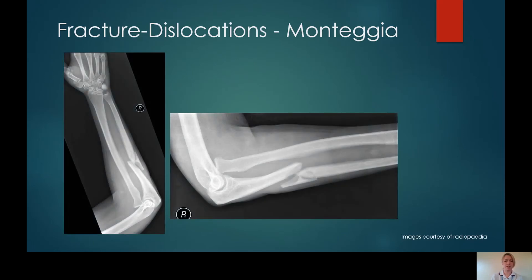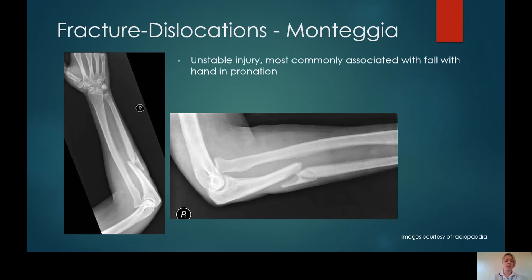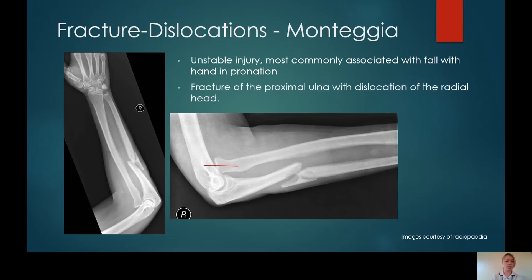More complex fracture dislocations: this is an example of a Monteggia fracture dislocation. These are unstable injuries, most commonly associated with a fall with the hand in pronation. You'll see that there is a fracture of the proximal ulnar diaphysis and also dislocation of the radial head. If you draw your radial capitella line, you'll see that it does not transect the capitellum. These are difficult injuries to miss — you will see the fracture — although make sure that you appreciate the entirety of that injury and draw your radial capitella line to identify this as a Monteggia fracture dislocation.